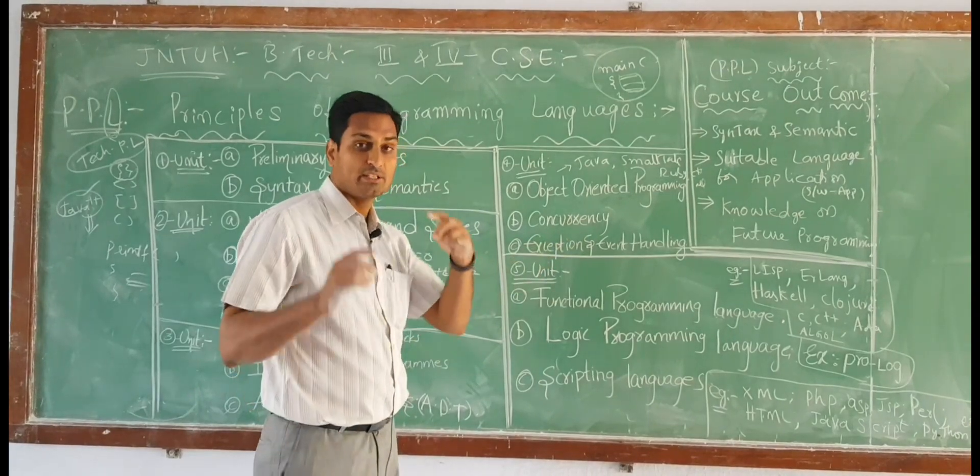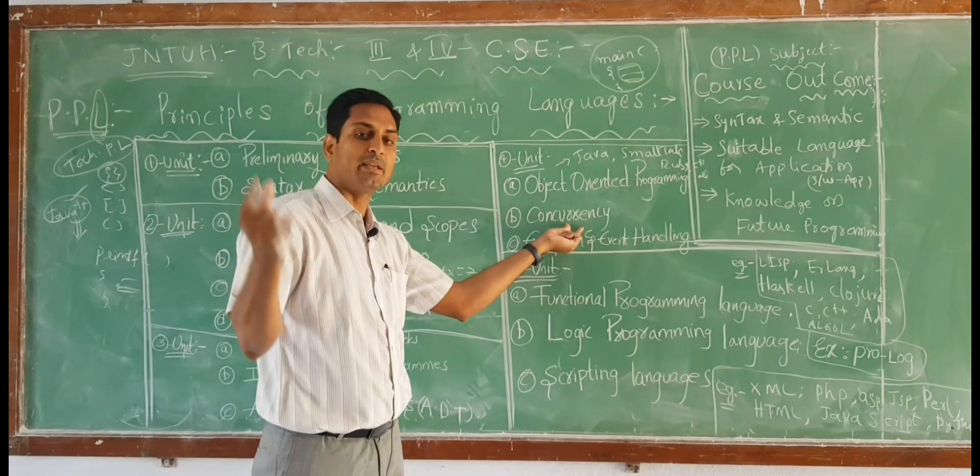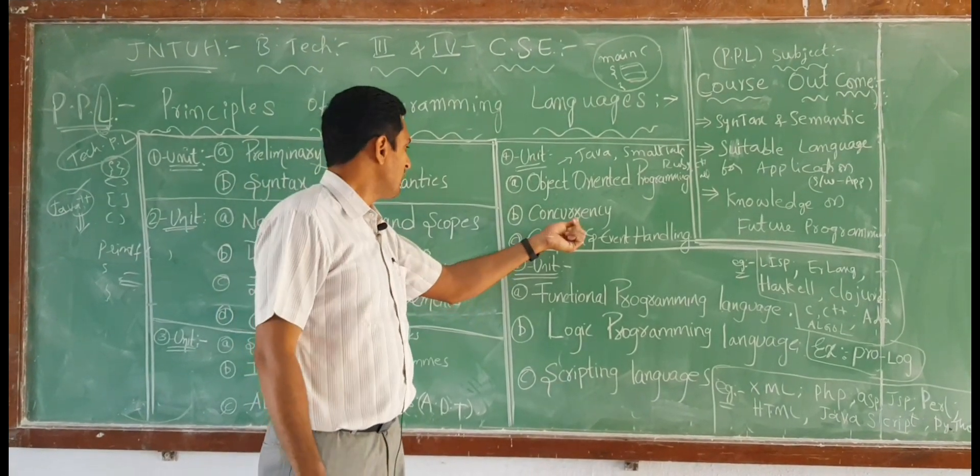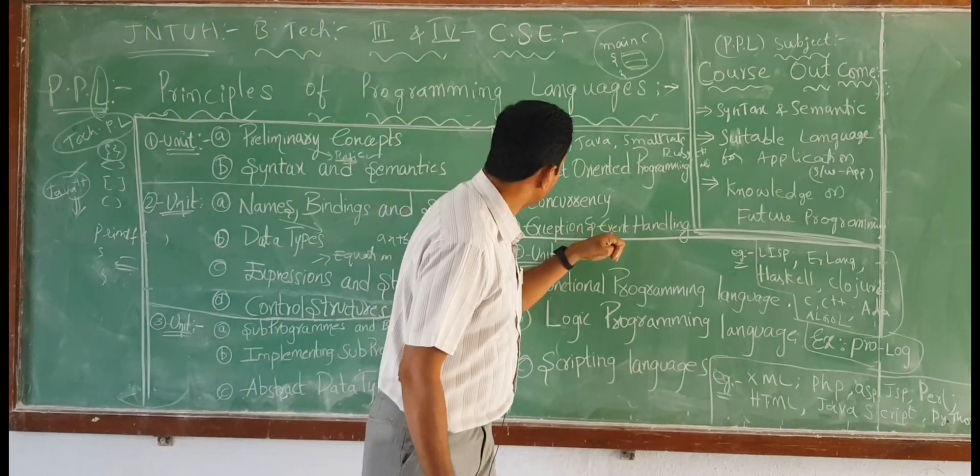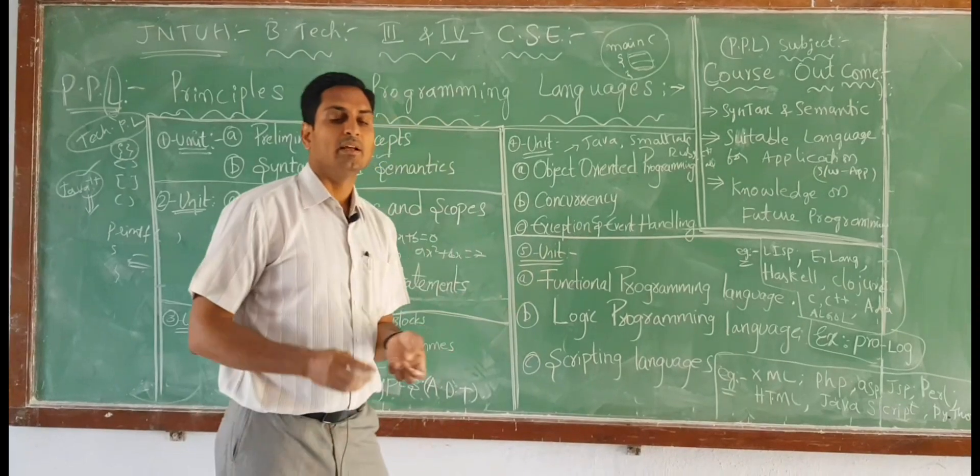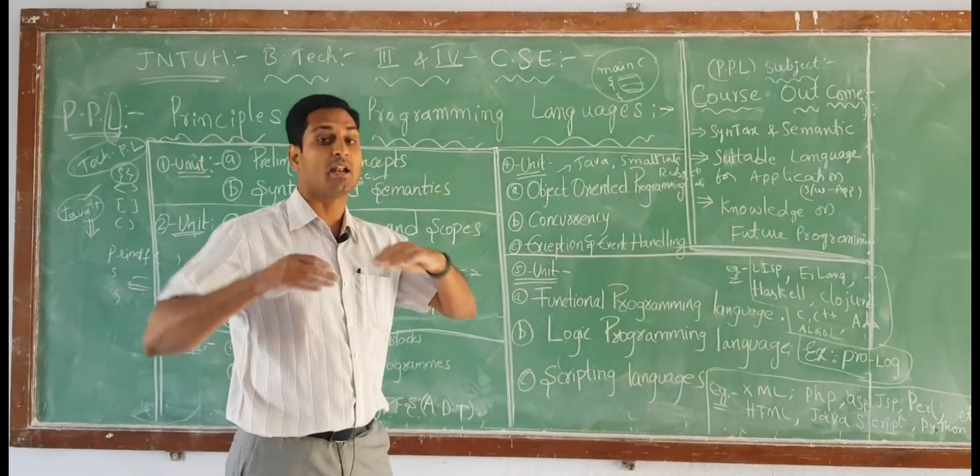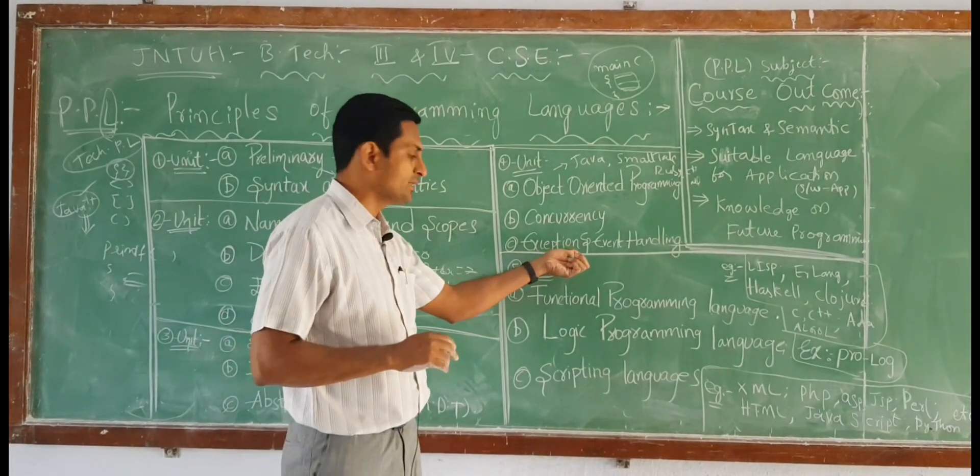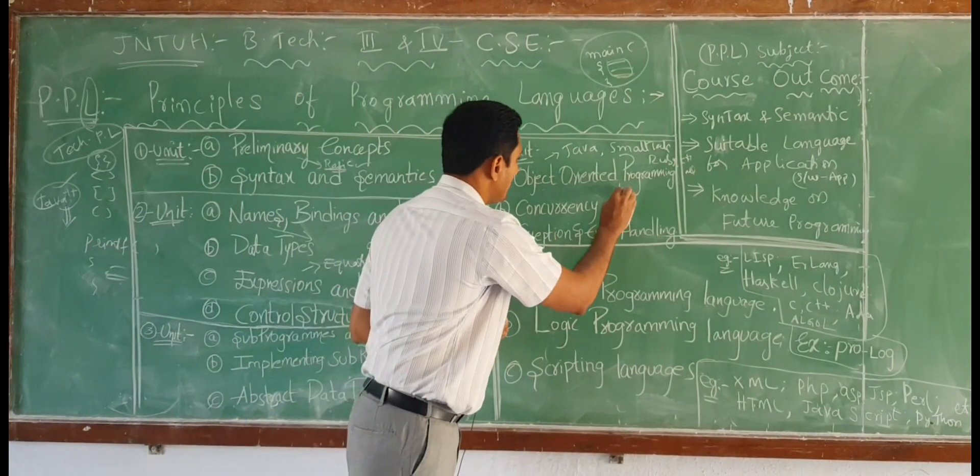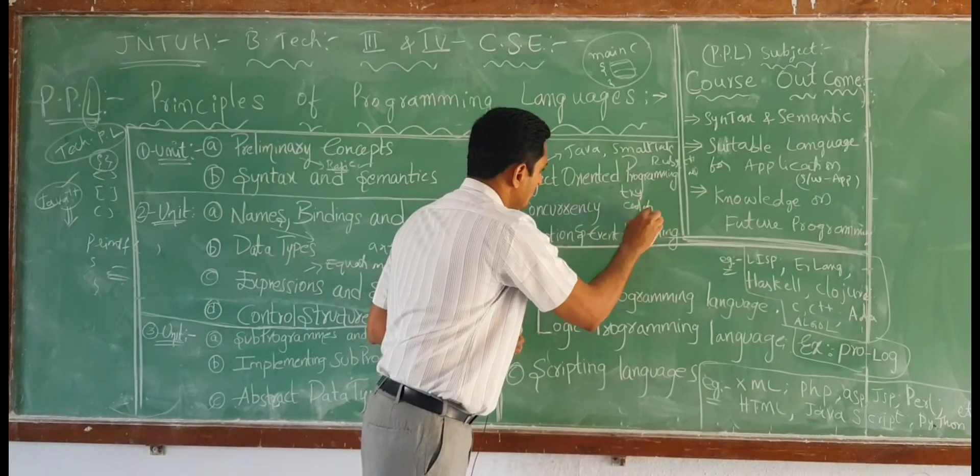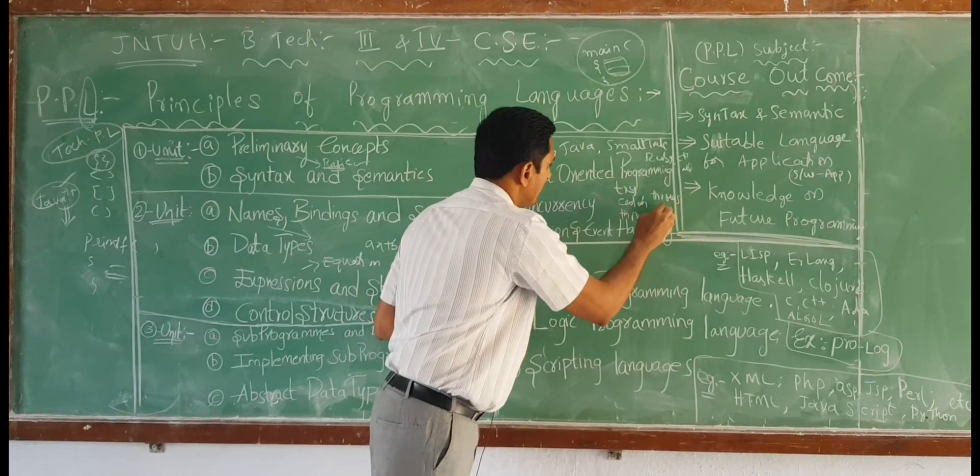Concurrency means executing simultaneously or synchronously many threads, many programs in a big application or big software. We execute all these threads, small programs at a time, is called concurrency. Exception and event handling: exception is the main feature in new generation programming languages. Exception means runtime error. In compile time also we will get some errors, while in runtime also we will get errors most of the time, that can be handled through some keywords called try, catch, throw, throws, and finally.